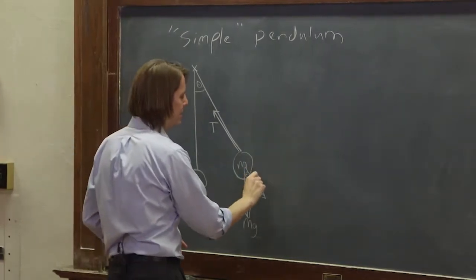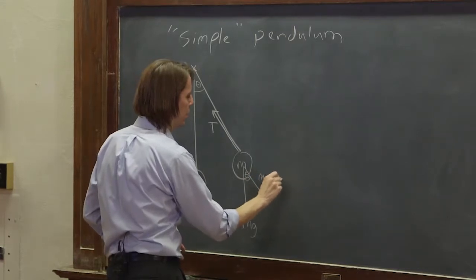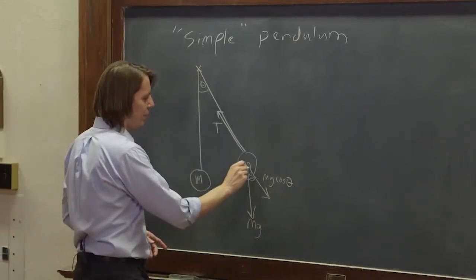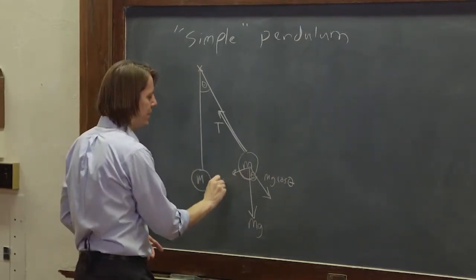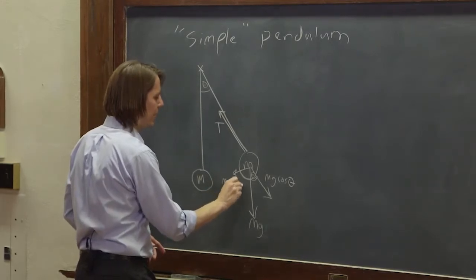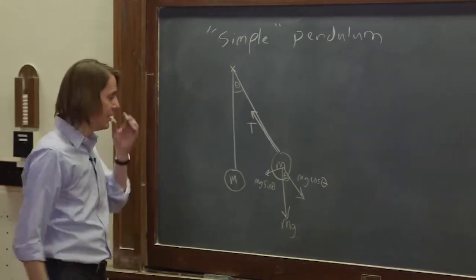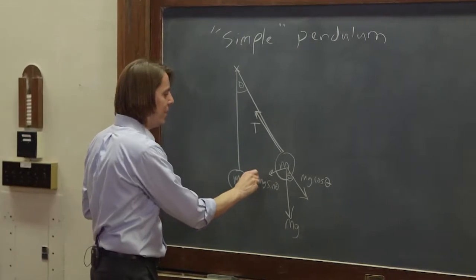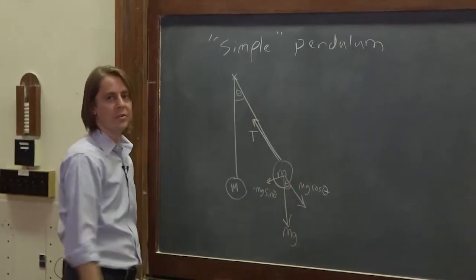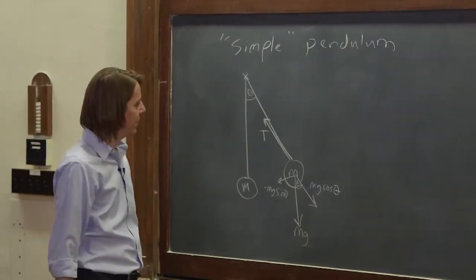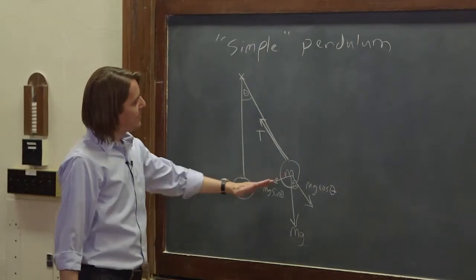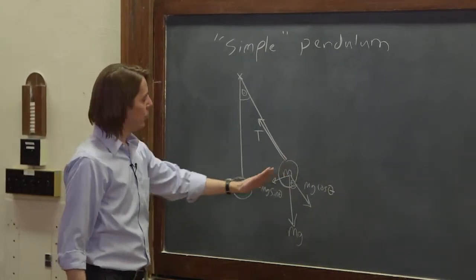And this would be mg cosine theta. And then you have a little component here that would be mg sine theta, pulling it back. And you'd probably put a negative sign on that because it'll pull it back towards zero, away from positive theta.